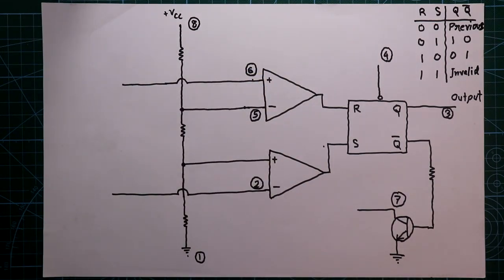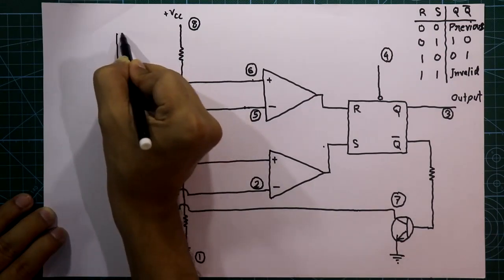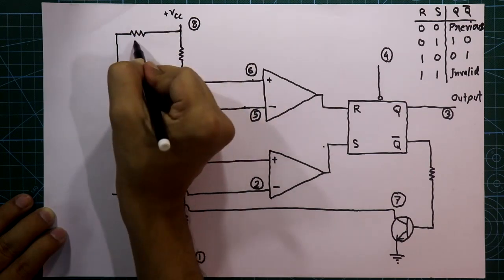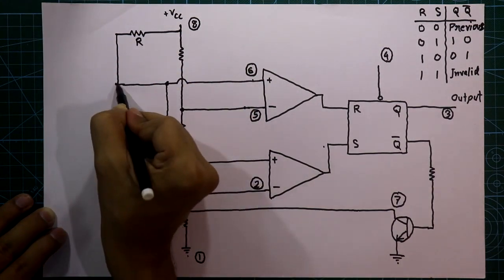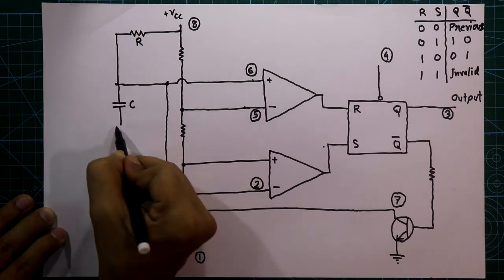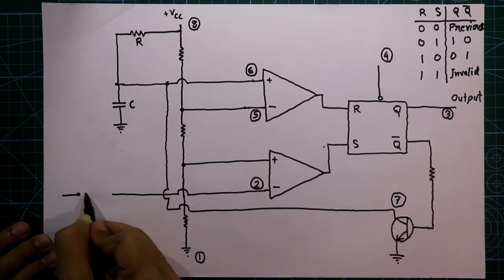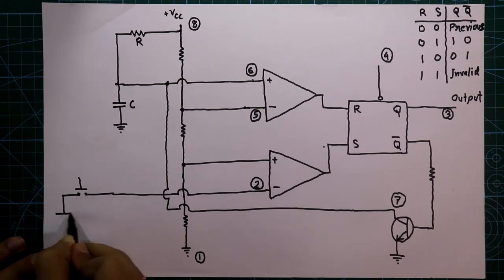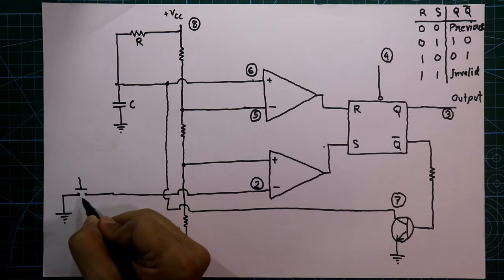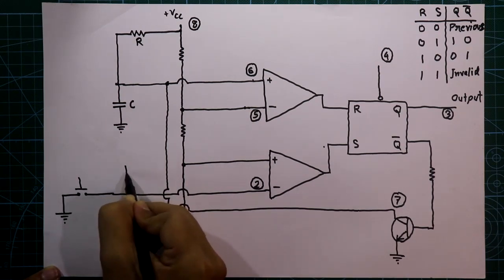To work IC555 in monostable mode we need to make specific connections. We connect pin number six and pin number seven together. Between pin number six and Vcc we connect a resistor R. With pin number six we also connect a capacitor C, which is then connected to ground. This trigger pin (pin 2) gets a push-to-on switch whose other side connects to ground — whenever we press the switch, pin number two will be at logic zero. We also connect a pull-up resistor to pin number two.